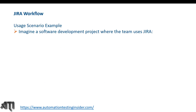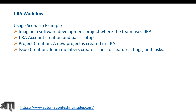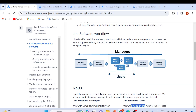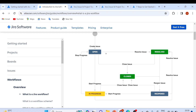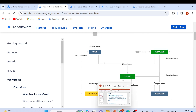Let me revise what we discussed. Imagine a software development project using Jira: first, Jira account creation and basic setup; second, project creation; third, issue creation — team members create issues for features, bugs, and tasks. Each issue progresses through a workflow from To Do to Done. The issue lifecycle is: Open, then In Progress, then Resolved, and from Resolved it can be Reopened or directly Closed.